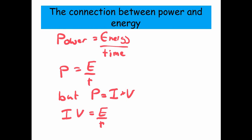So the equivalent, basically, IV equals E over T. And if I move the T over to the other side, I find this equation, E equals ITV.